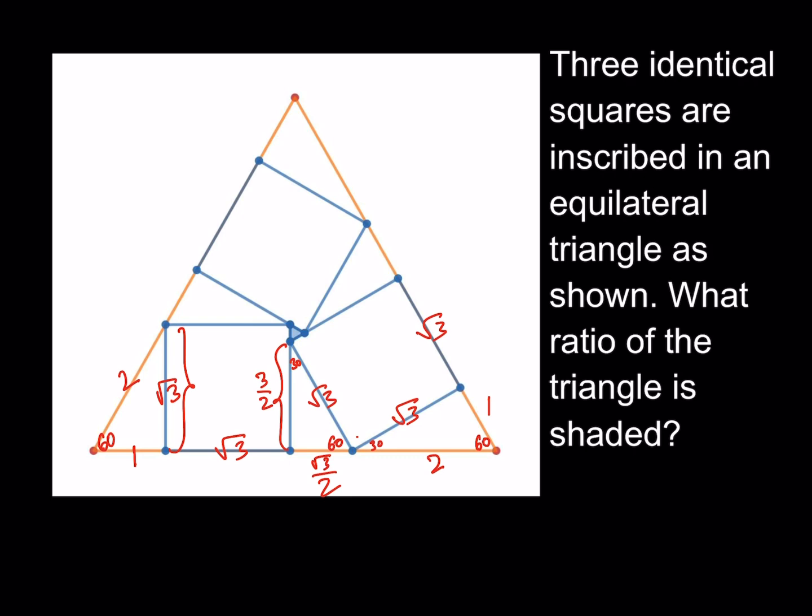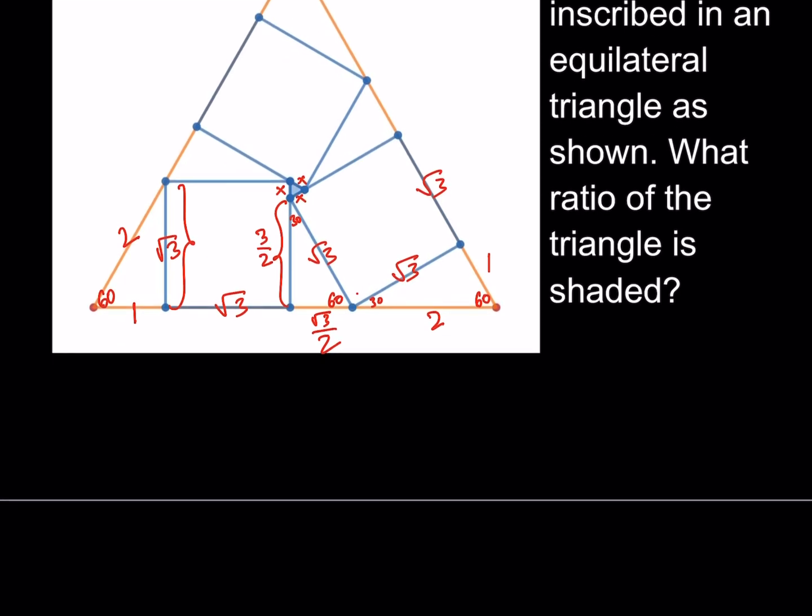Therefore, that little piece here, if you call that x, that little piece for the side length, x, x, x, then x is going to be square root of 3 minus 3 halves. Awesome. Then what I can do is I can actually make a common denominator and write it as 2 root 3 minus 3 divided by 2. So that would be the side length for my little tiny triangle in the middle.